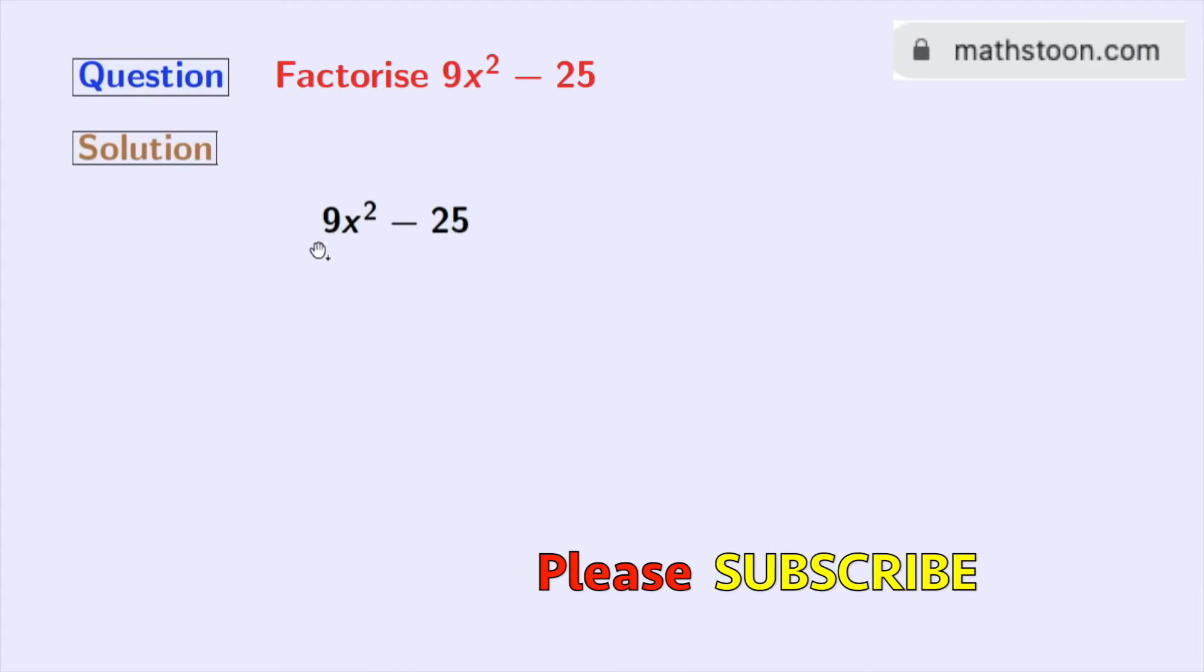This is our given expression 9x square minus 25. Now we will express each of these terms as a square of something. Doing so, we get 3x whole square minus 5 whole square.